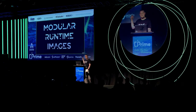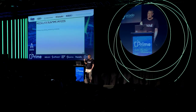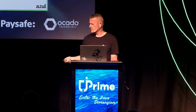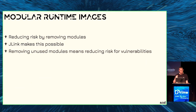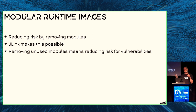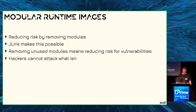Another thing you can do is use modular runtime images with J-Link. It reduces risk by removing unused modules. If you don't have XML in your JDK, there's no way to attack it through XML. Removing unused modules means reducing the risk for vulnerabilities, and you also get a smaller JDK. Hackers cannot attack what isn't there — it's really that simple.